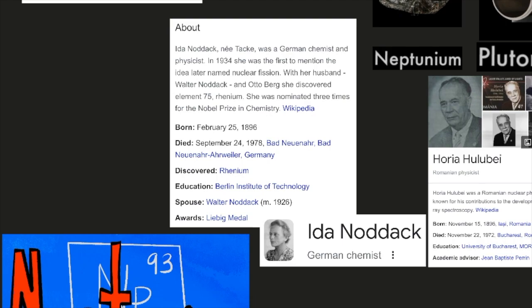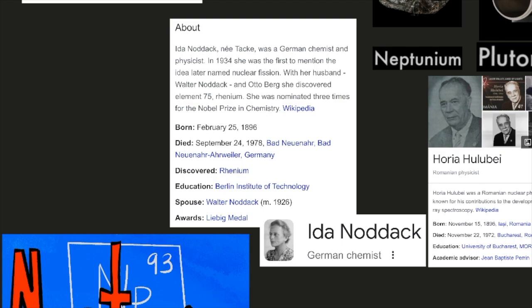Ida Noddack was a German chemist and physicist. In 1934, she was the first to mention the idea later named nuclear fission. With her husband Walter Noddack and Otto Berg, she discovered element 75, rhenium. She was nominated three times for the Nobel Prize in Chemistry, according to Wikipedia. Fermi had in fact discovered nuclear fission, but not realized it.